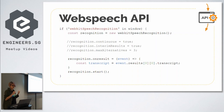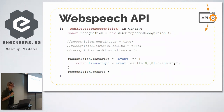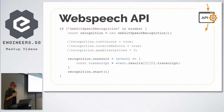In my demo I set 'continuous' to true so that even as I pause, it continues to listen. For 'interimResults', the default is also false, meaning only final results get sent back — in my demo I set it to true so I get a stream of results as I speak. There's also 'maxAlternatives', which defaults to one; in my demo I set it to three, though usually the first result is the most accurate.